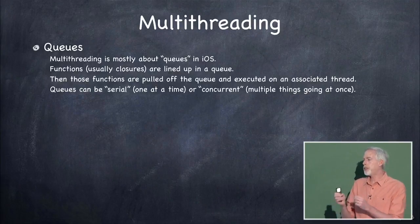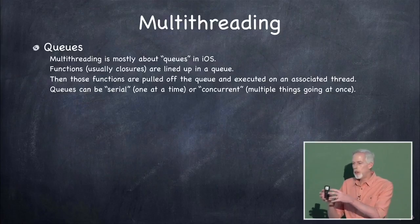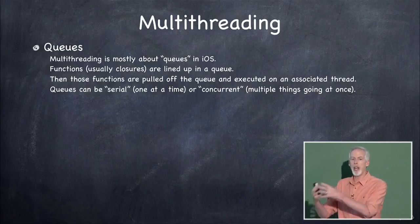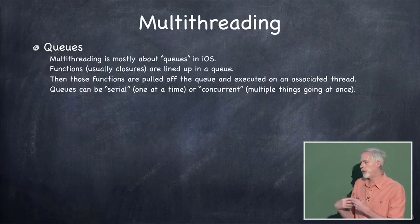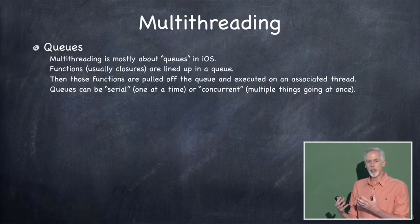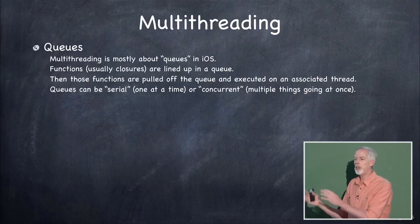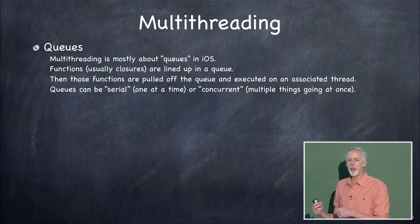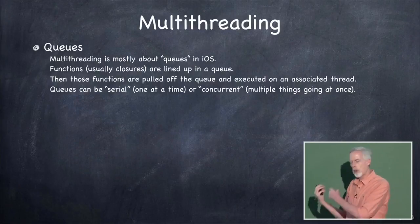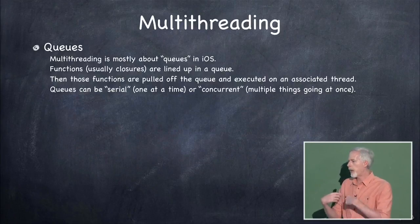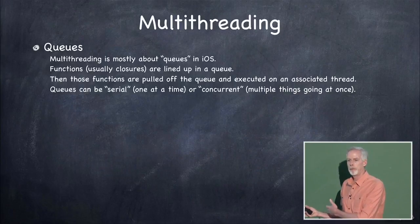Queues can either be serial, which means the function on top of the queue gets pulled off, runs to completion, and then the next one gets pulled off — that's serial queues. Or they can be concurrent, where the system pulls the top one off, starts it running in a thread, and if it has more thread resources, takes the next one off and starts it running in another thread while the first one's still running. It might keep pulling a whole bunch off — that's a concurrent queue.